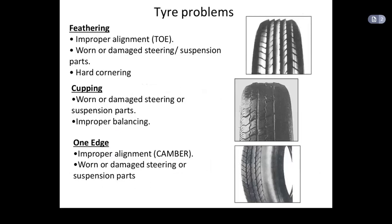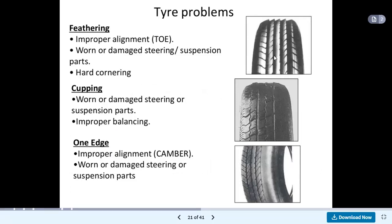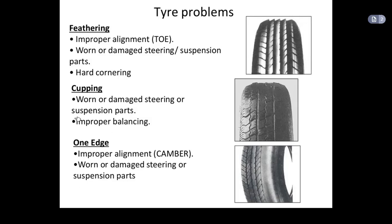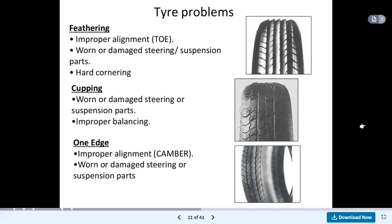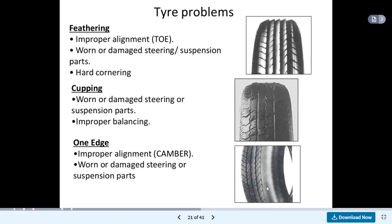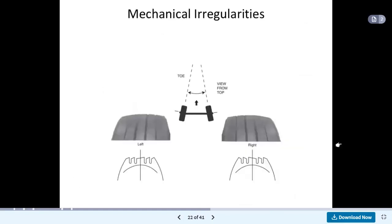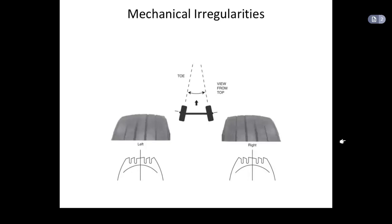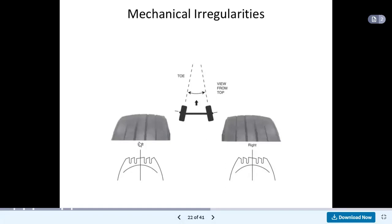What are the different problems that occur with tyres? Feathering is a major problem — caused by improper alignment, which results in worn or damaged steering or suspension parts, and hard cornering. Cupping is also a problem, caused by worn or damaged steering or suspension parts and improper balancing. If one edge is damaged due to improper alignment, this tyre problem occurs. Looking at the mechanical irregularity diagram, this shows toe action viewed from the top — left and right direction views of this condition.